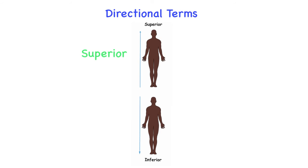The next set of terms are superior and inferior. Superior refers to towards the top of the body, or above. The term inferior refers to the bottom of the body, or below. So superior is towards the top or above, and inferior is towards the bottom or below.